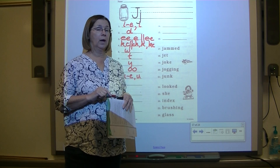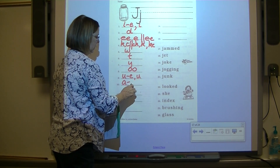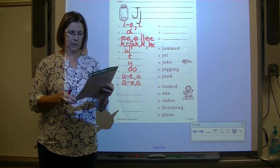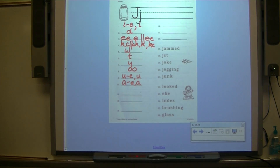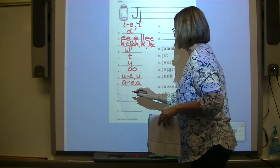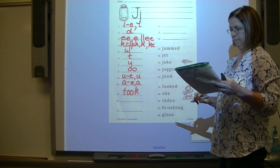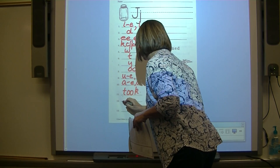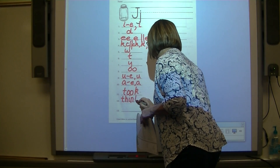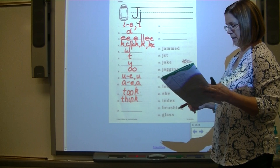Number ten: echo A — these three have a pattern: the vowel, vowel-consonant-E, comma, and then the vowel. Number eleven: let's spell the word 'took' — she took him to the store. T, then the digraph OO sound, K — took. Number twelve: think — what do you think? TH is a digraph, then I-N-K — think. Number thirteen: echo J — write the letter that says J.